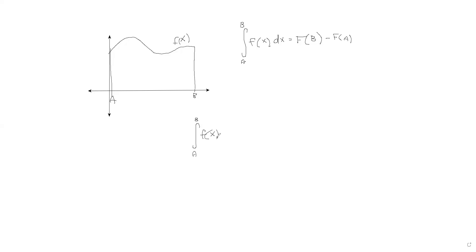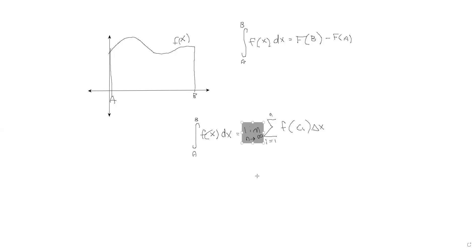The definite integral from A to B of f(x) dx is given by the limit as n approaches infinity of the sum of f(c sub i) times delta x. I want to get into each of these things bit by bit to help us understand the big picture, but this isn't the main concept of the video, so I'm not going to spend too much time on it — this should just be a quick refresher. N is going to be the number of rectangles in a Riemann sum.